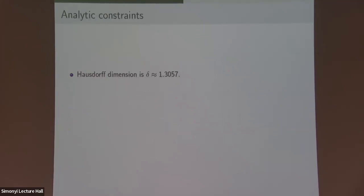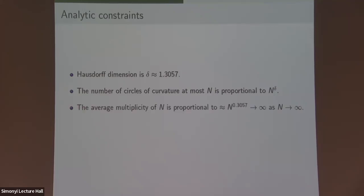First you can think about this question analytically. This picture is a fractal — really the same picture all the time. It's a fractal with Hausdorff dimension approximately 1.3. It's been proven that the number of circles with curvature at most N is proportional to N to this Hausdorff dimension, and this is true for any circle packing regardless of integrality. But since our curvatures are all integral, these fall into N bins, and the average multiplicity of a curvature is like N to the delta minus one, roughly N to the 0.3, which goes to infinity.